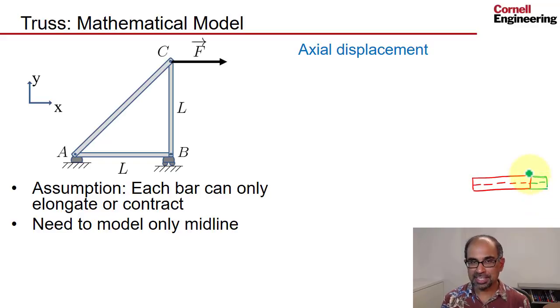This means that the key unknown we want to find is the axial displacement. Let me call that D. And actually you can figure that out once you know how much each pin moves.